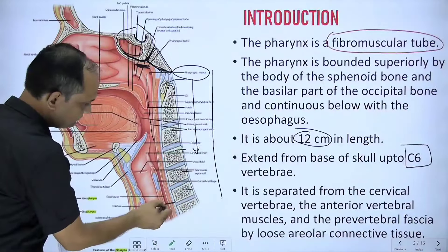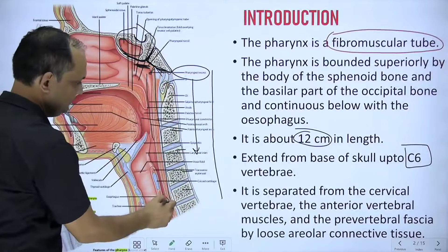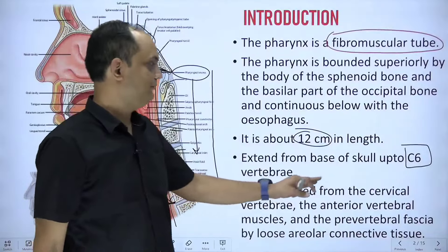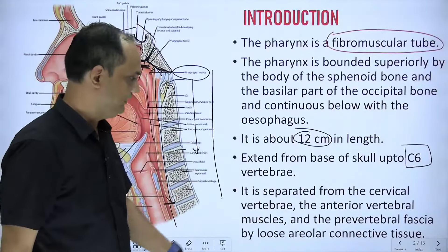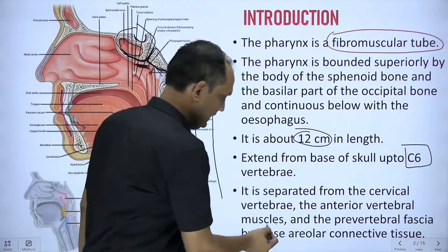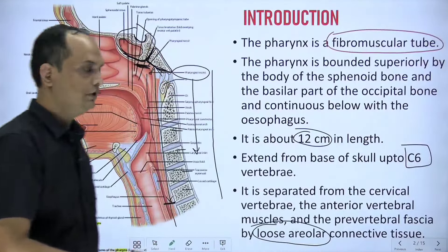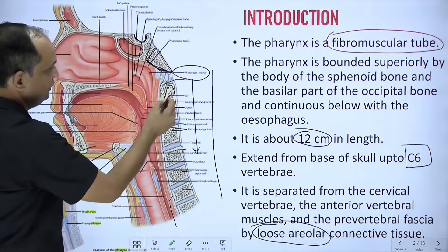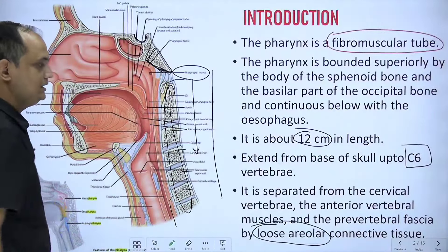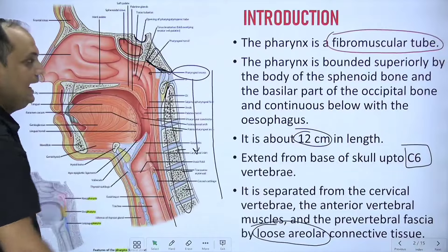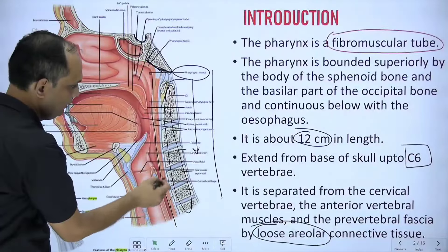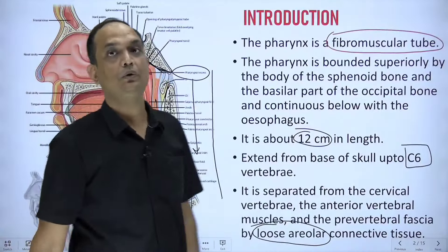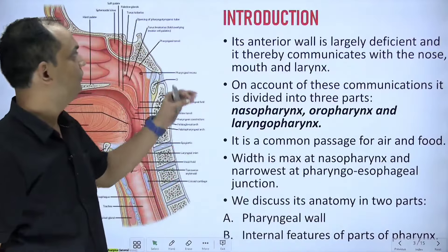Up to the level of C6 we consider it as pharynx, and below this you have the esophagus. It is separated from the cervical vertebra, anterior vertebral muscles, and the prevertebral fascia by a loose areolar tissue. The posterior wall is backed by the bony vertebral column covered by muscles, and the pharynx remains separated from these muscles by a loose areolar tissue space known as the retropharyngeal space.